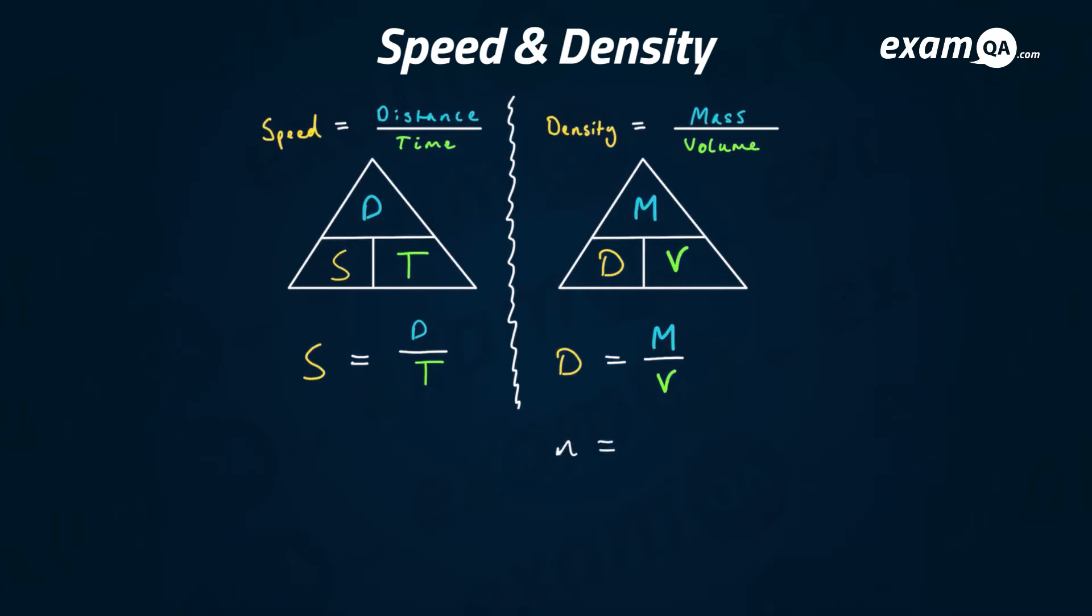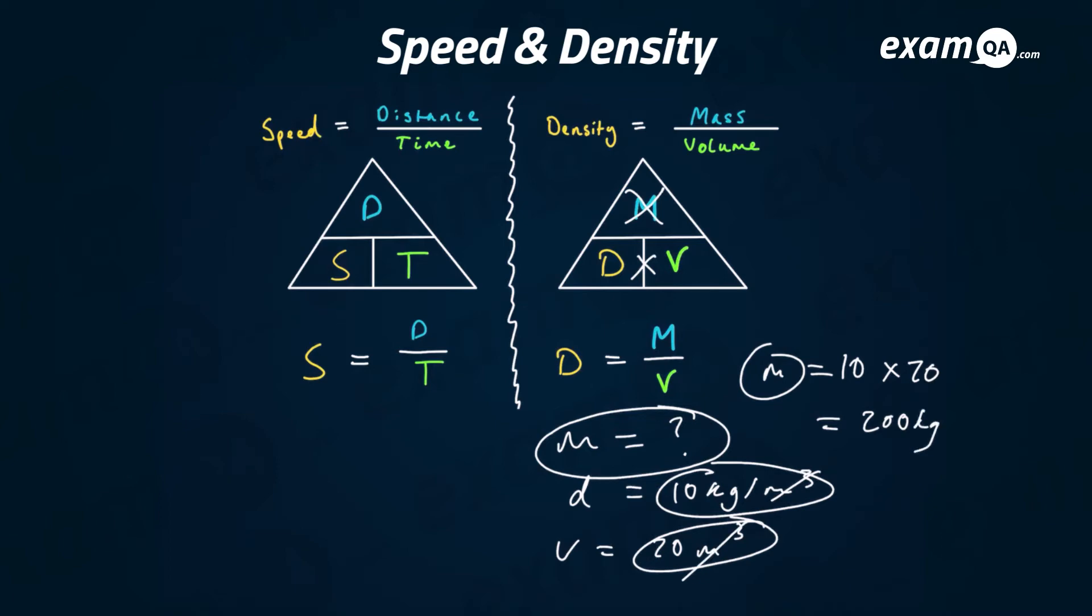Let's say they said work out what the mass is equal to if the density of this object was 10 kilograms per meter cubed and the volume was 20 meter cubed. We want to work out m so we're going to cover m on the triangle and because d and v are next to each other it's going to be times, so m equals d which is 10 times v which is 20.